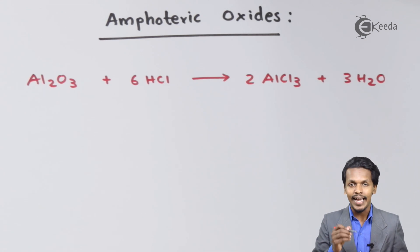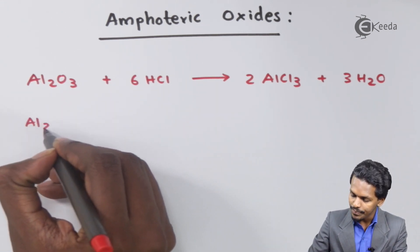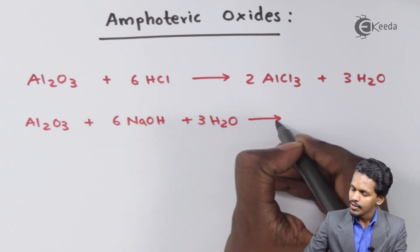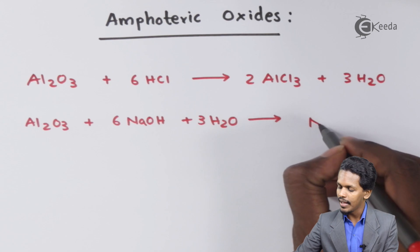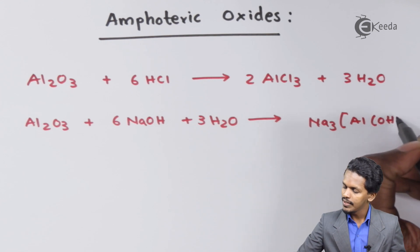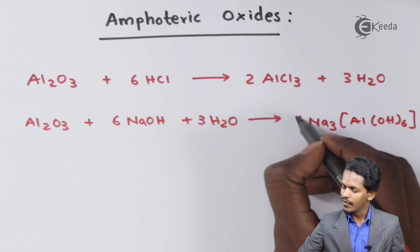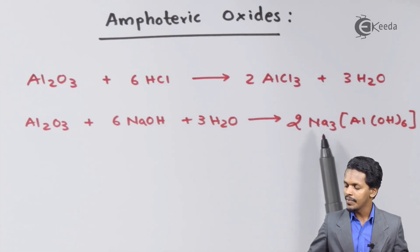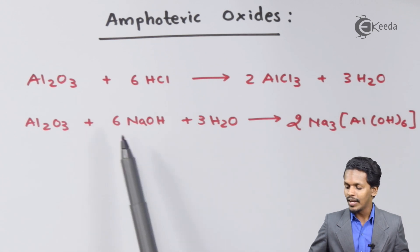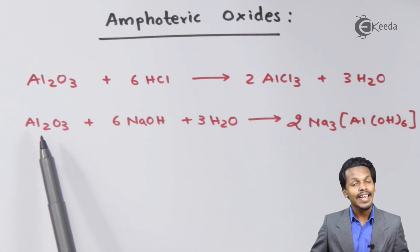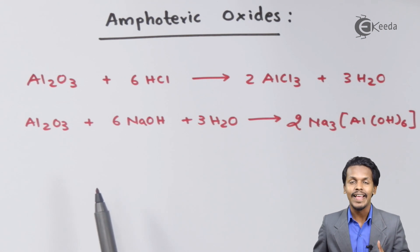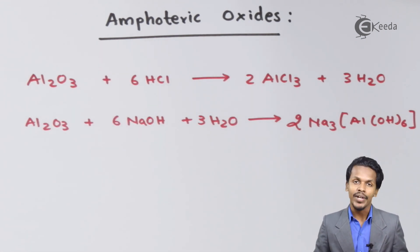Al2O3 can also react with a base. When Al2O3 is reacted with six moles of NaOH, the product formed is a complex known as sodium hexahydroxyl aluminate. This proves that this oxide can act as an acid when reacted with a base, giving it the characteristics of both an acidic oxide and a basic oxide. That is why Al2O3 is known as an amphoteric oxide.